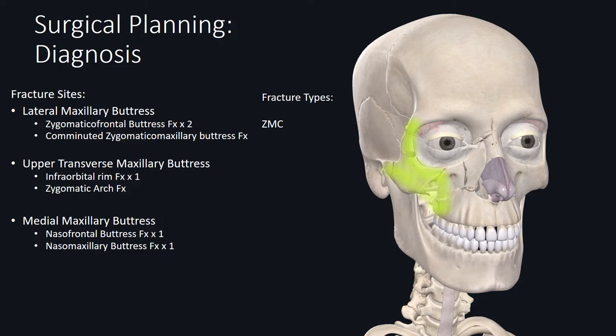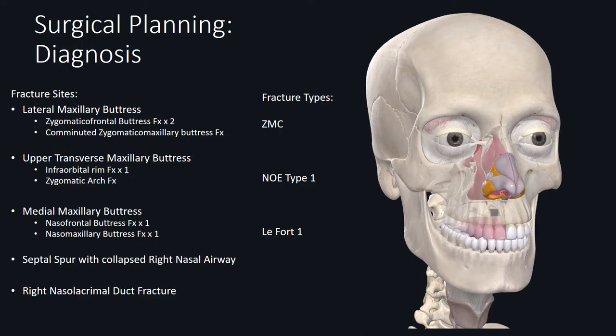You also have a NOE Type 1 fracture from the nasal frontal buttress fracture, infraorbital rim fracture, and nasal maxillary buttress fracture. Next, we have an incomplete LeFort 1 fracture from the nasal maxillary buttress fracture and the zygomatic maxillary buttress fracture. Lastly, we have a septal spur with collapsed right lateral nasal wall, as well as a right-sided lacrimal duct fracture.